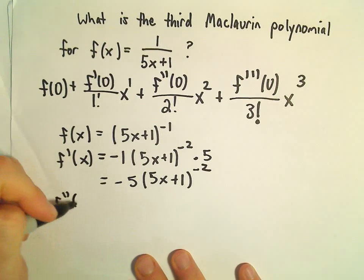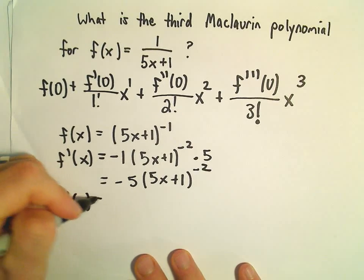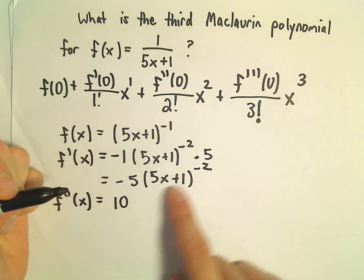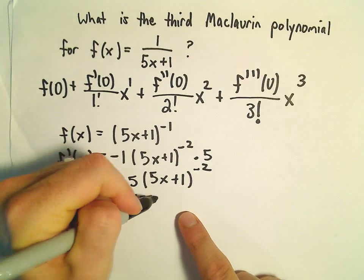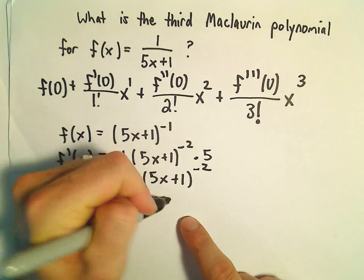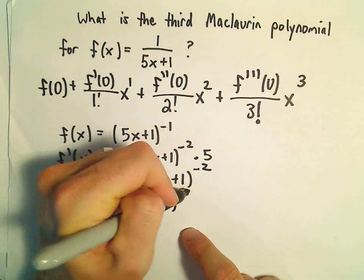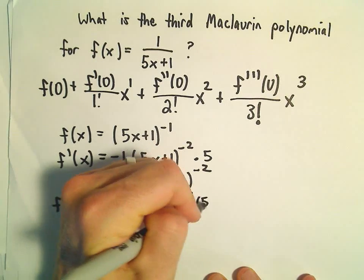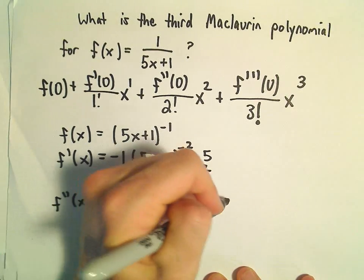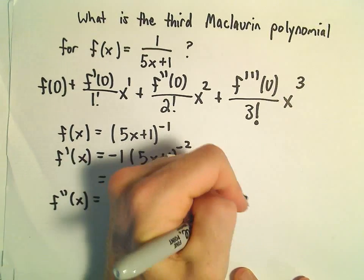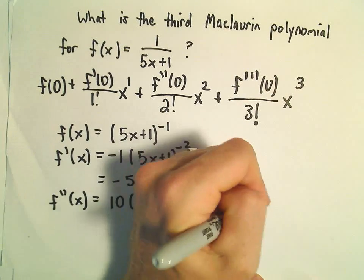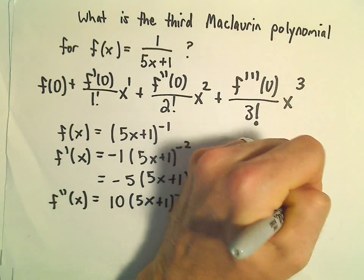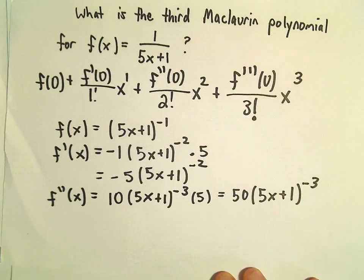For f double prime of x, we'll get positive 10 when we take negative 2 times negative 5, giving (5x+1) to the negative third. And again, we'll pick up yet another 5, so we'll have 50 times (5x+1) to the negative third.